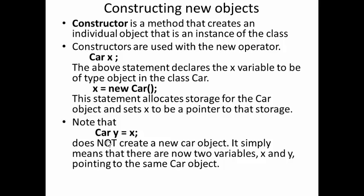The statement declares x to be a type object in the class car. x is assigned new car. That statement allocates storage for a car object and sets x to be a pointer to that storage. Please note that car y equals x does not create a new car object. It simply means that there are now two variables, x and y, that are pointing to the same car object.